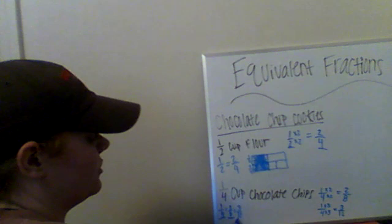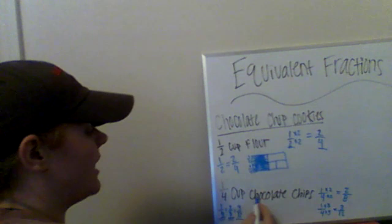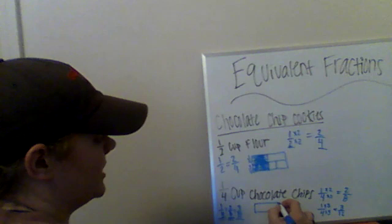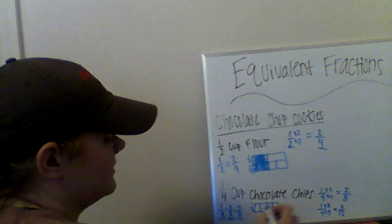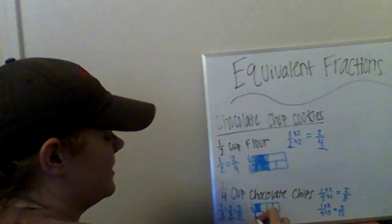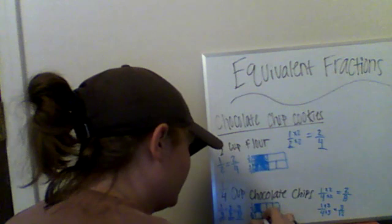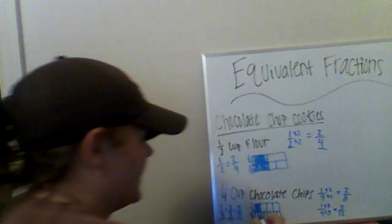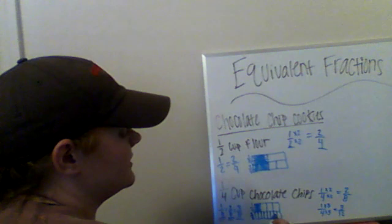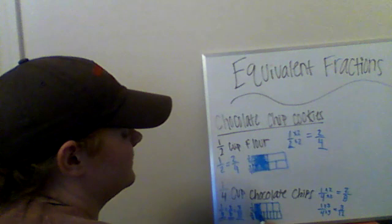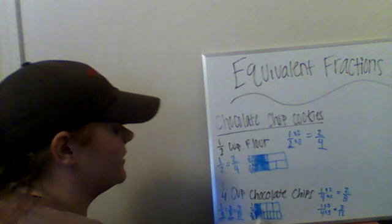I'm just going to use one-fourth and two-eighths to show they're equivalent in my model. My top one is one-fourth — I'm going to cut that into four pieces and I only used one-fourth of it. My bottom one is two-eighths — I'm going to cut them into eight pieces, and I only used two pieces. This shows that one-fourth and two-eighths are equivalent because they use the same amount represented in the model.